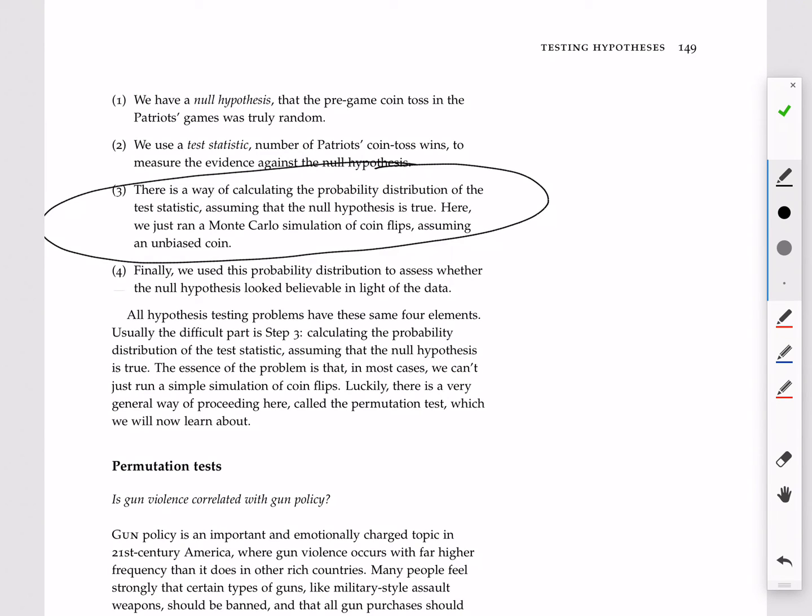The essence of the problem is that, while for this case, we can just flip coins, in most cases we can't. The world is more complicated than coin flips. Luckily, however, there's a very general way of proceeding with step three. It's called a permutation test, and that's what we'll learn about in a future video.